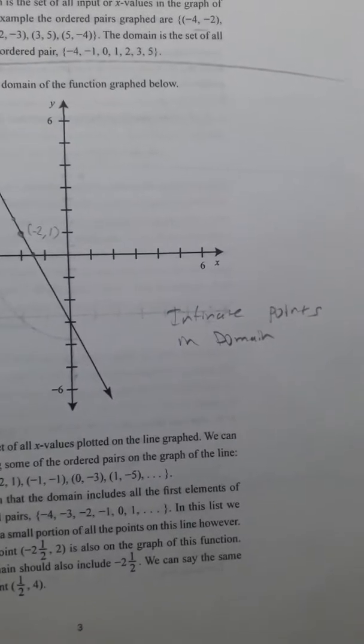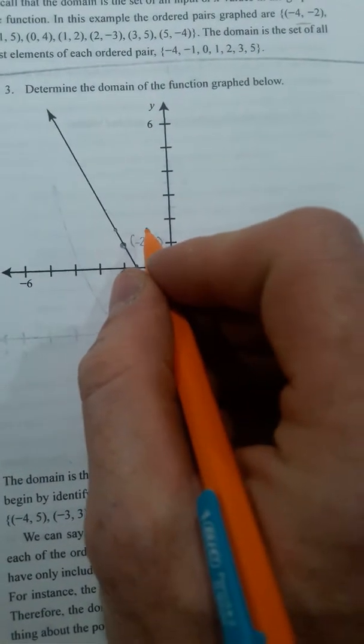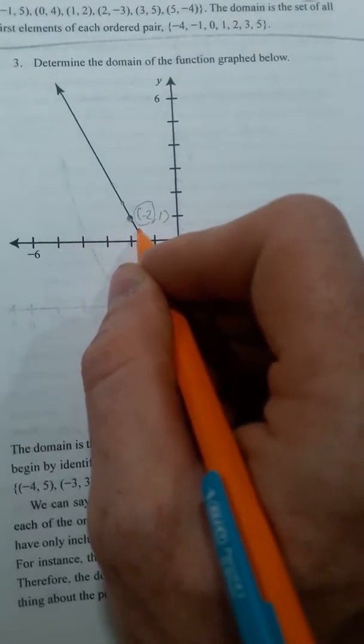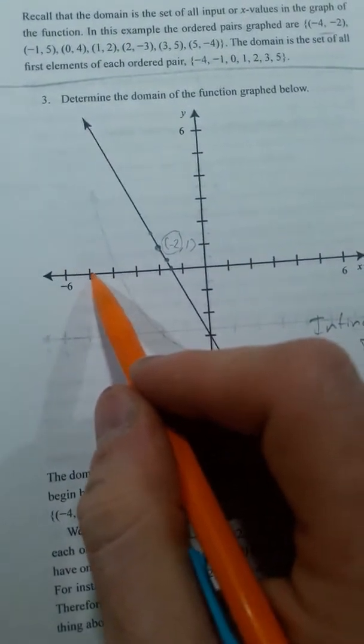So these arrows indicate it goes on forever and ever. So there's actually infinite points on the domain. So my domain could have a negative 2. It could also have a negative 1.5. It could have a negative 5.